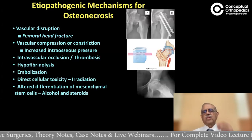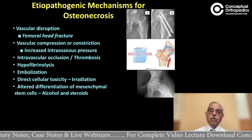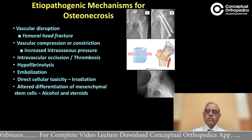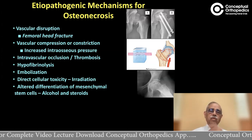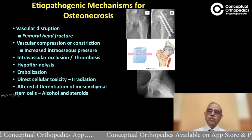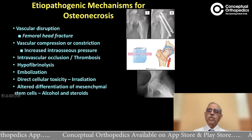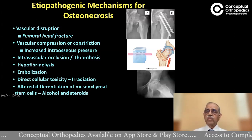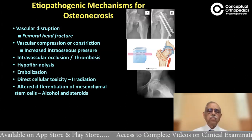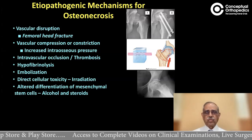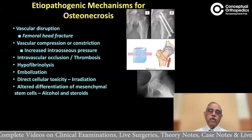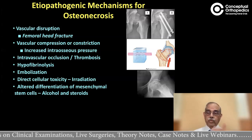What are the causes, etiopathogenesis, and the different mechanisms of osteonecrosis? The first is usually due to vascular disruption — the classical example being a femoral head fracture. As seen in this X-ray, a fracture neck of the femur was operated on with two screws, and nearly one and a half years later the patient developed avascular necrosis of the head of the femur. The second cause is vascular compression or constriction, which results in increased intraosseous pressure in the bone, thereby impairing blood supply to the head of the femur.